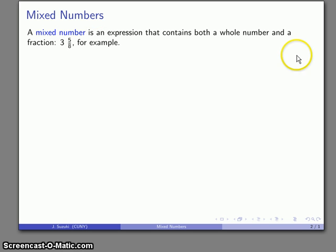So what's a mixed number? Well it's an expression that contains both a whole number and a fraction. So for example something like this, we have our whole number portion 3, we have a fraction portion 5/8, and it's called a mixed number because you kind of mix them together in this sort of hodgepodge number.